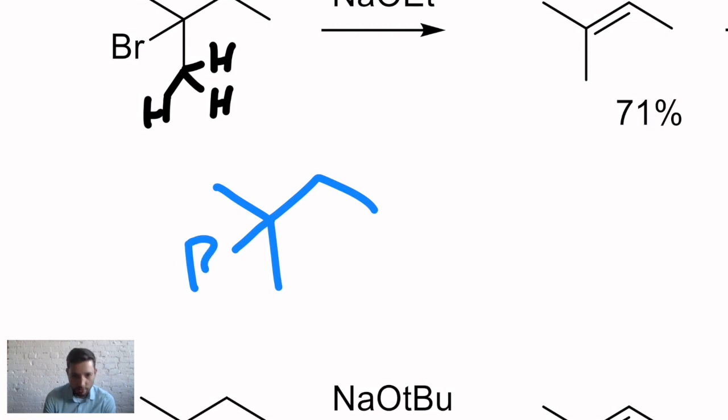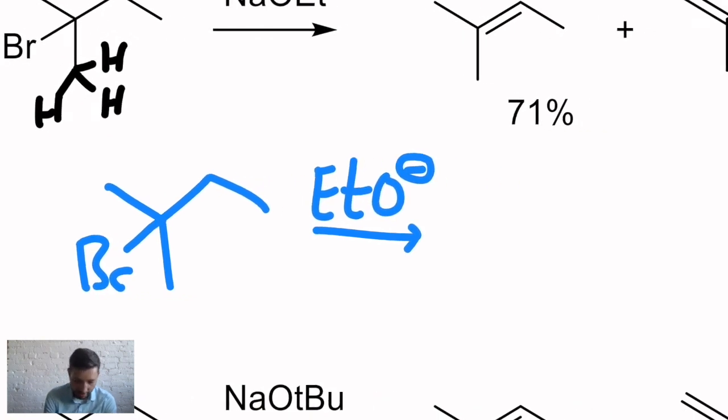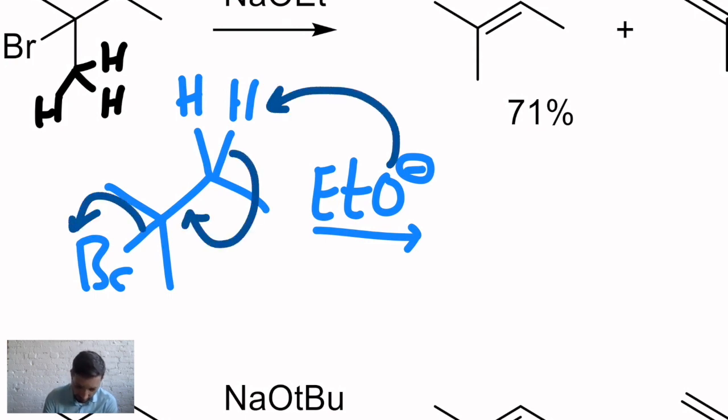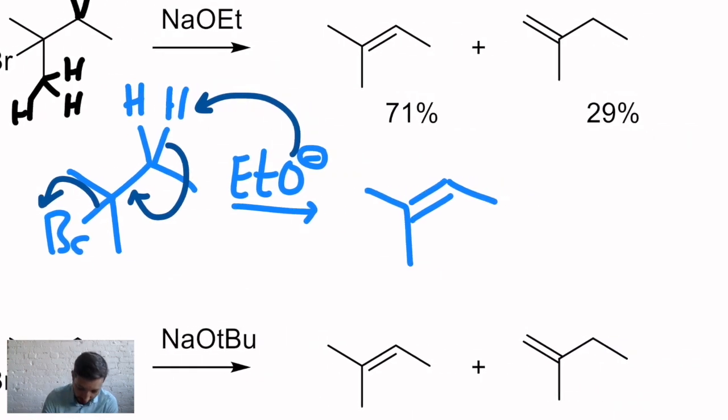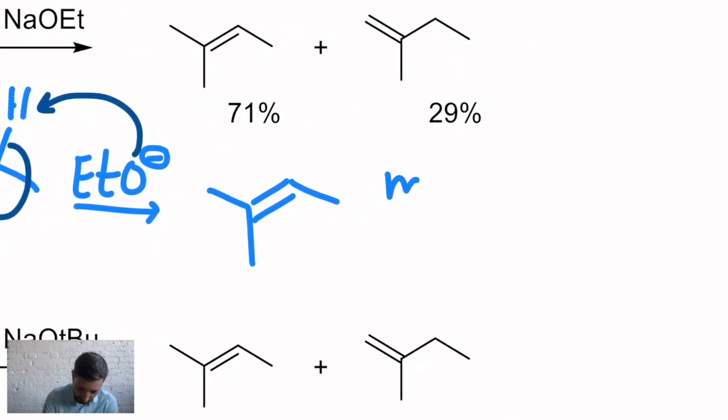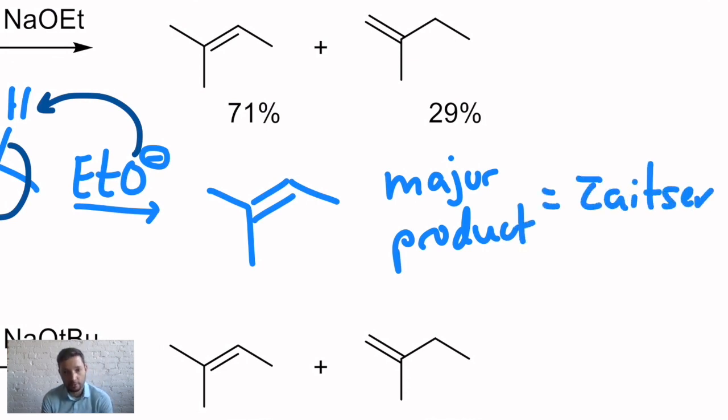If you use a small base, in this case ethoxide, you'll get a preference for taking away an H that's from a spot where there are fewer hydrogens. So this ethoxide takes this H, CH bond breaks to form a pi bond, carbon bromine bond breaks, and you get this alkene, in this case the major product. We call this the Zaitsev product. And this is normally what we see in E2 reactions.